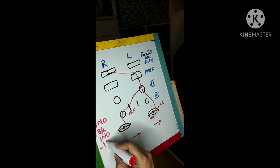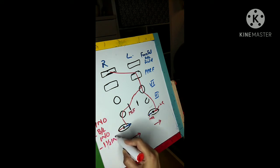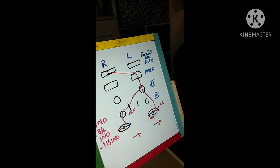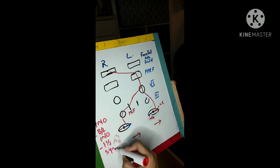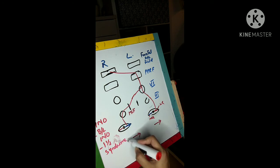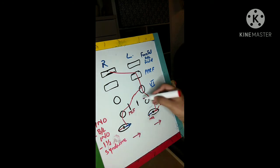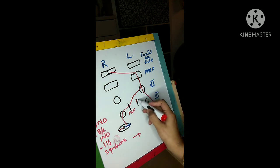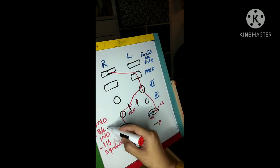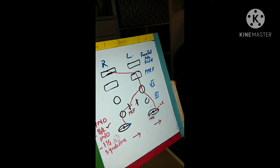INO has different types: simple internuclear ophthalmoplegia, bilateral internuclear ophthalmoplegia, and one-and-a-half syndrome. Bilateral INO is caused when we have bilateral medial longitudinal fasciculus lesions — lesions on both sides. The next is one-and-a-half syndrome, which happens when the ipsilateral sixth nerve nucleus or parapontine reticular formation, plus the ipsilateral MLF, is damaged.